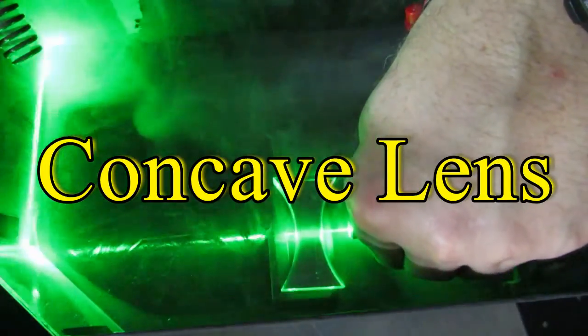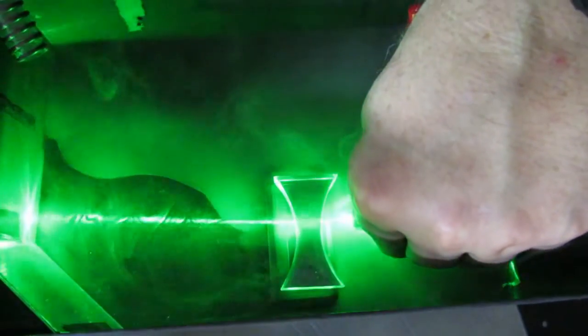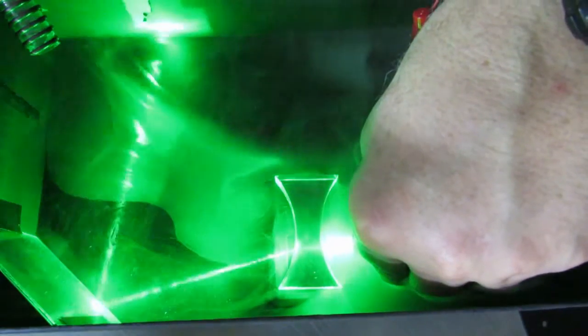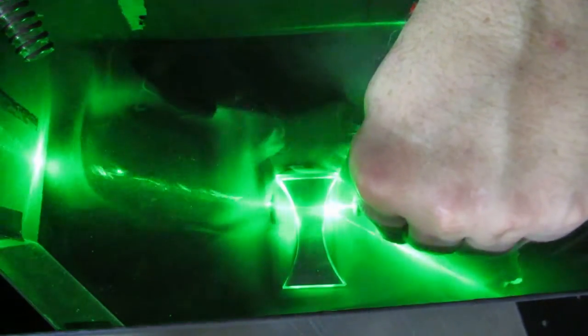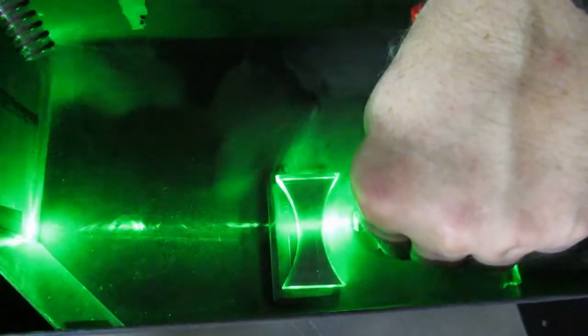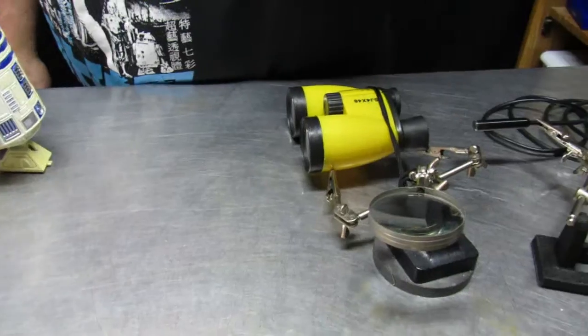We've already seen how concave lenses work in bending the light. Well, the same principles apply to all optical instruments. You want to bend the light in order to produce the kind of image that you want to see.